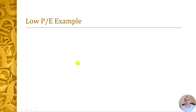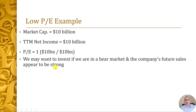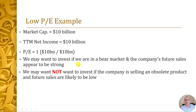Now let's look at a low PE example and talk about the pros and cons. Say this company had a $10 billion market cap and trailing 12-month net income of $10 billion — a PE of one. So you get your money back in one year, there's almost no risk investing in this company. Why doesn't everybody just put their money into this company? We may want to invest if we're in a bear market and the company's future sales seem strong. The stock market may be crashing, every stock is going down including this one, but the company sells a product that everybody needs — it could be a large supermarket chain, for instance. But what if they're selling an obsolete product and future sales are likely to be low? We may want to avoid this stock.